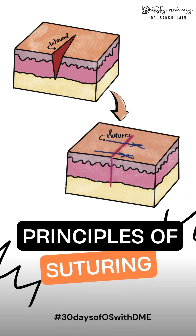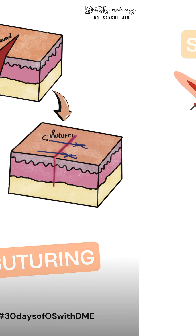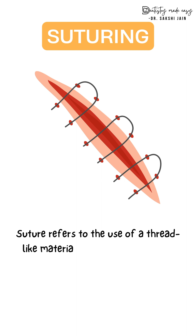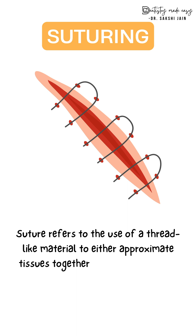Starting with the next topic: principles of suturing. A suture is a thread-like material with the help of which you can approximate the tissues together or ligate the blood vessels.